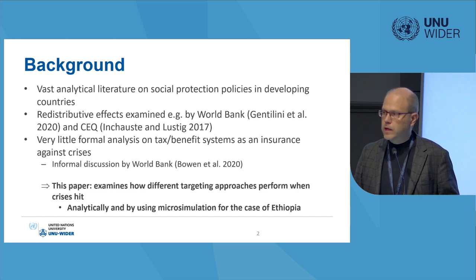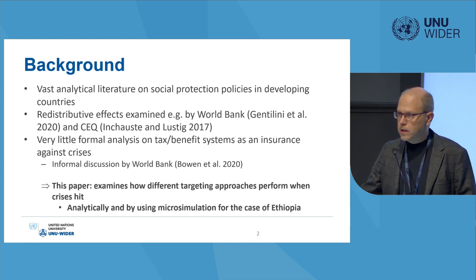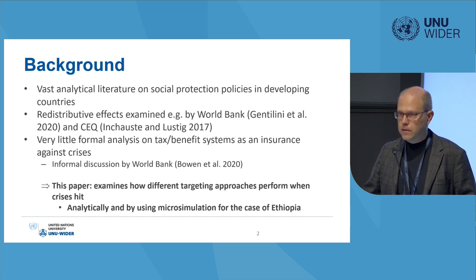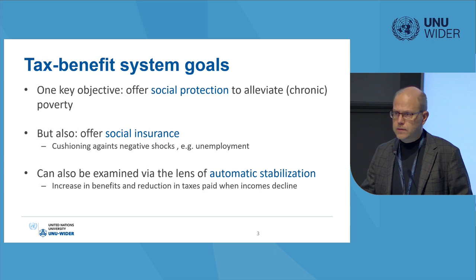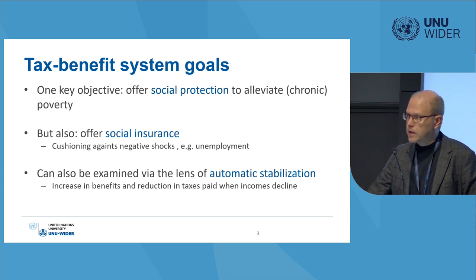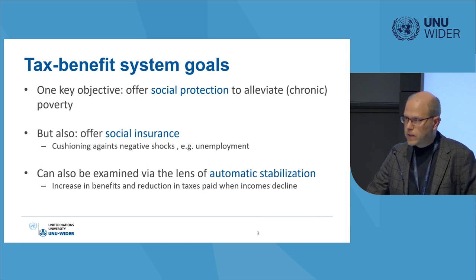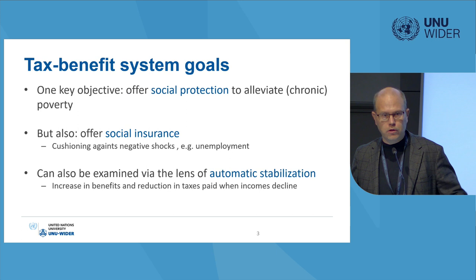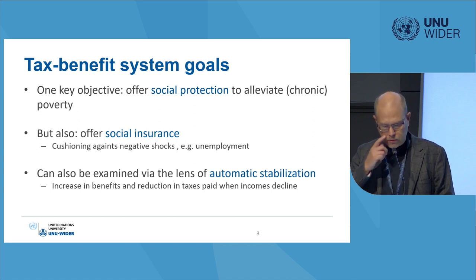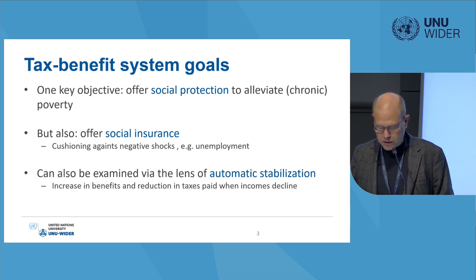We use a microsimulation approach, and that is why I am fortunate to have Adnan as a co-author as he is an expert. We also have some analytical thinking before we embark on the microsimulation part. The key objective of tax, benefit, and transfer systems is to alleviate long-term or chronic poverty, but these systems should also provide social insurance — programs like unemployment insurance or health insurance in the developed world.